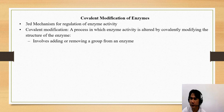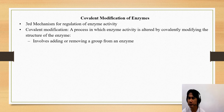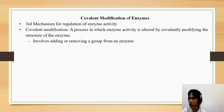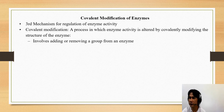The third mechanism for regulation of enzyme activity is covalent modification of enzyme. Covalent modification is a process in which enzyme activity is altered by covalently modifying the structure of the enzyme — by addition of a substance or group to the enzyme, or removing a group from the enzyme.